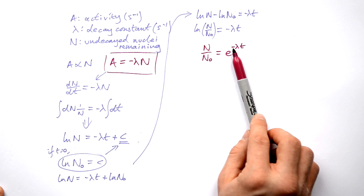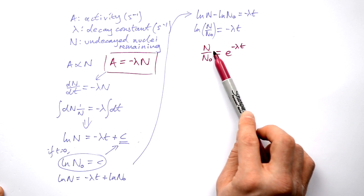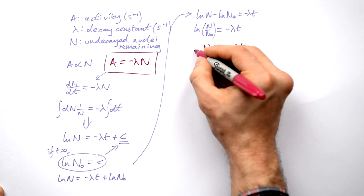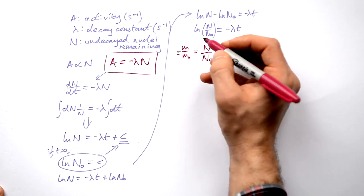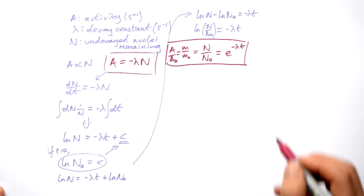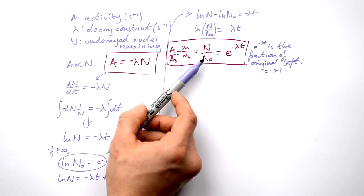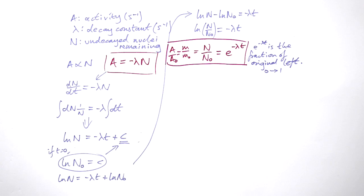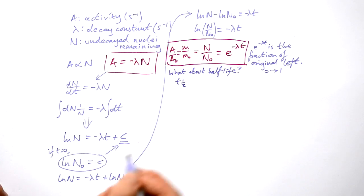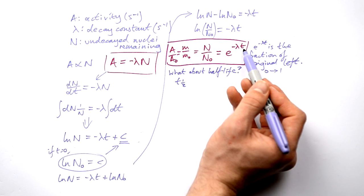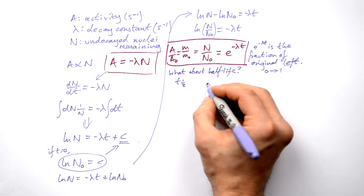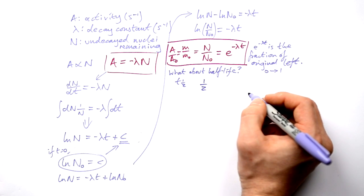Using this equation, we can find out after a certain time what fraction of nuclei we have left compared to what we had at the beginning. This also works for mass, and more importantly, it works for activity too. So if you've got a third of the original nuclei left, that means e to the minus lambda t is also a third. So what about half-life? If this time is the time it takes to have half left, then N over N₀ is a half.